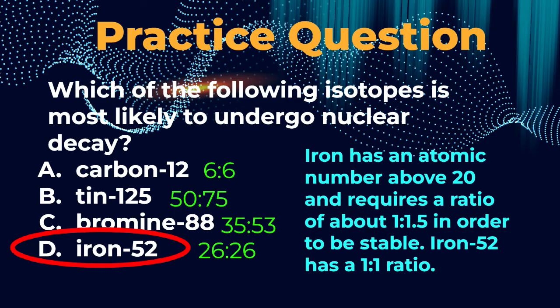For tin-125, it has 50 protons. If we subtract 50 from 125, we see that it has 75 neutrons, and 50 to 75 is 1 to 1.5. So tin-125 should be pretty stable.